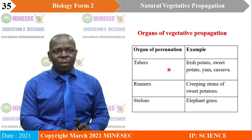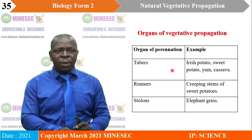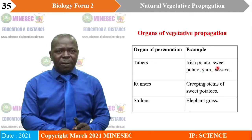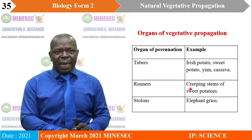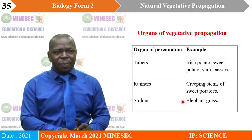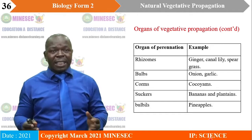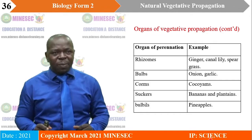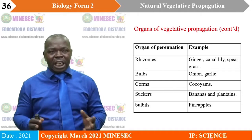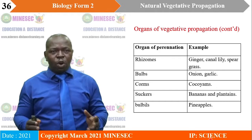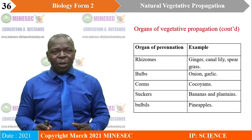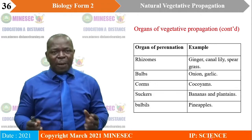Tubers are underground storage swollen roots — examples include Irish potato, sweet potato, yam, and cassava. Runners are creeping stems on the surface of the earth — example: sweet potato. Stolons are also creeping stems — example: elephant grass. Rhizomes include ginger rhizome, spear-grass rhizome, and canary rhizome. Bulbs include onion and garlic, which is used as a spice in food. Corms include cocoyam corms, which are common in our environment. Suckers include banana and plantain suckers. And we have ratoons like pineapple ratoons.